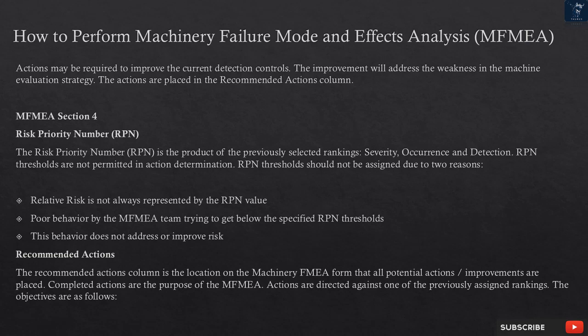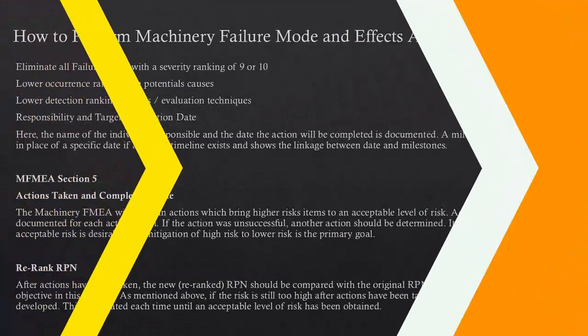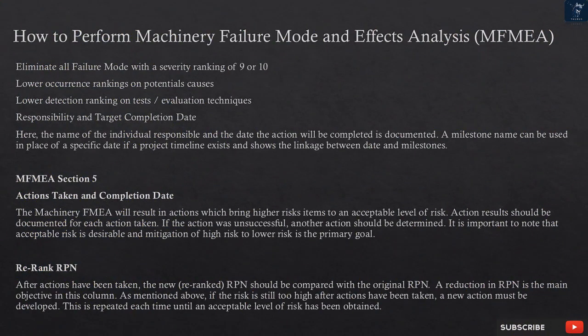This behavior does not address or improve risk. Recommended actions: the recommended actions column is the location on the MFMEA form where all potential actions and improvements are placed. Completed actions are the purpose of the MFMEA. Actions are directed against one of the previously assigned rankings. The objectives are: eliminate all failure modes with a severity ranking of 9 or 10; lower occurrence rankings on potential causes; lower detection rankings on test/evaluation techniques. Responsibility and target completion date: the name of the individual responsible and the date the action will be completed is documented. A milestone name can be used in place of a specific date if a project timeline exists.